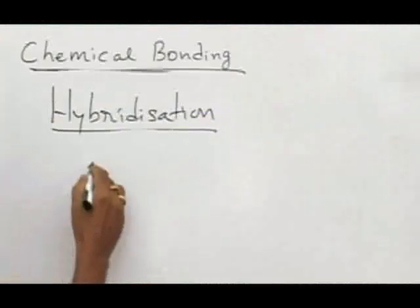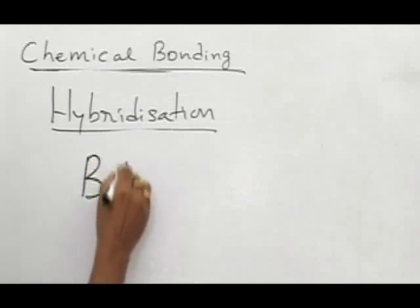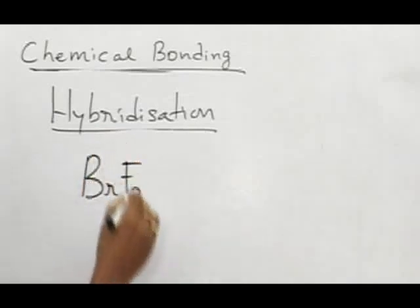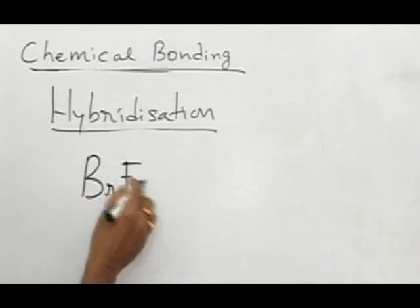Next one is an interhalogen compound, BrF3. So interhalogen compounds are very reactive, except fluorine, and they have weak covalent bonds.